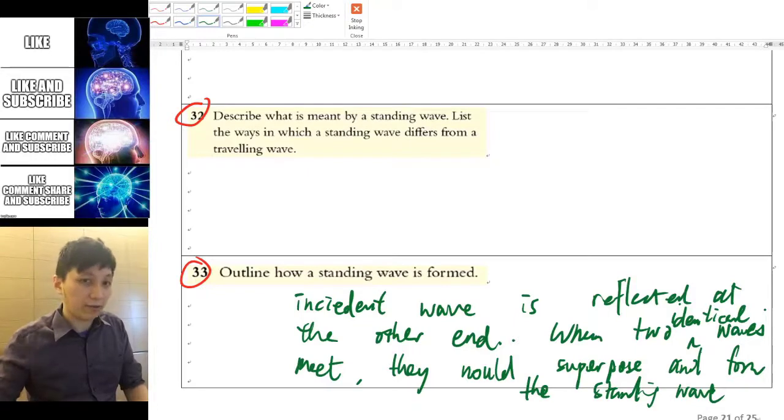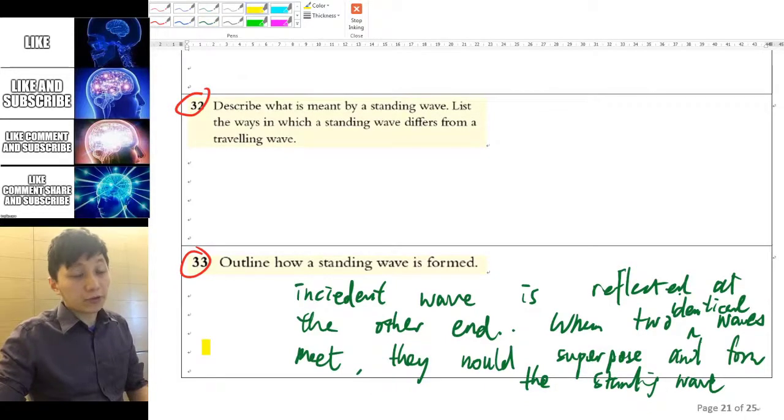That's why we introduced the idea of superposition to you earlier in this chapter and also the idea of reflection having a phase change or not, because that will affect the pattern of a standing wave.